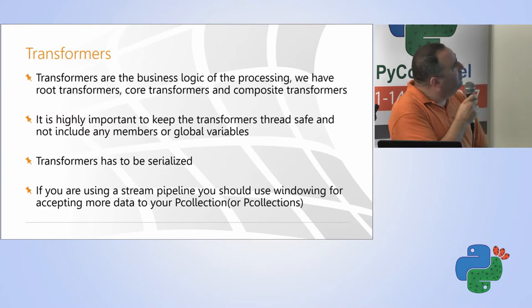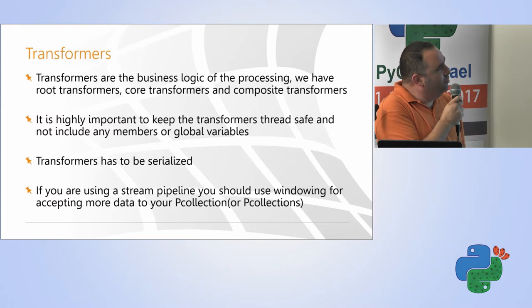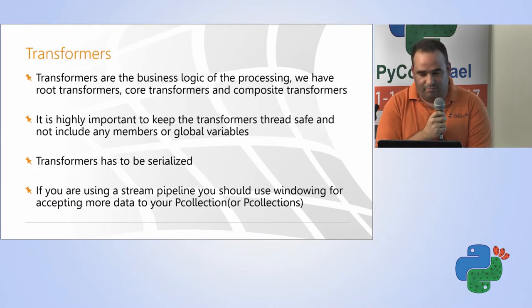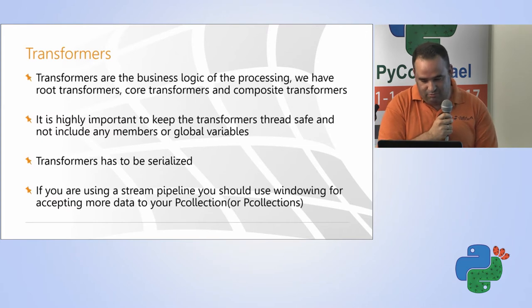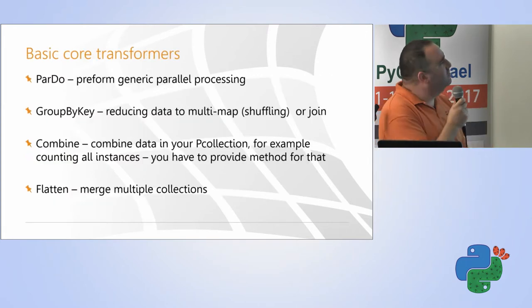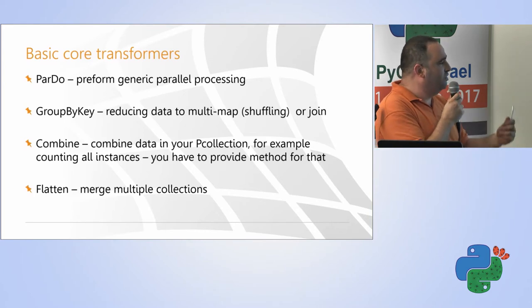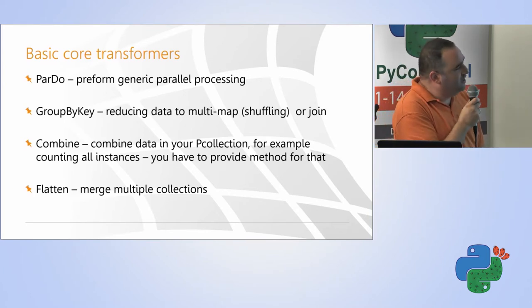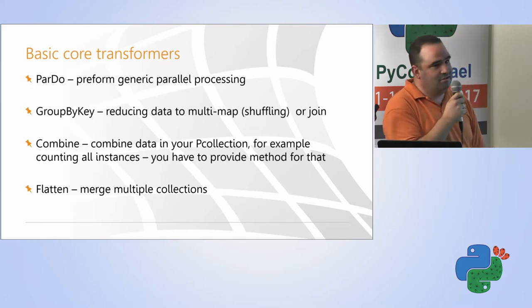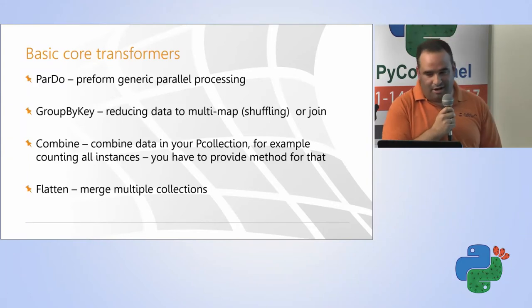Okay, let's move forward. Transformers are the main components that you can actually analyze your data, working on your data. We have all kinds of transformers. I will try to move as fast as I can to see the code. We have parallel do, we have group by, we have combining, we have shuffling, flooding the data, and all kinds of actions that are very similar to stuff in Spark or something like that.